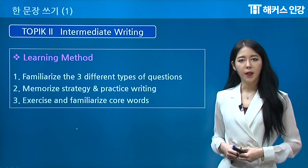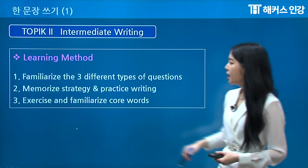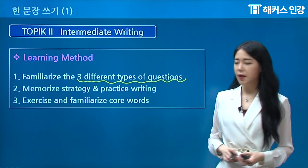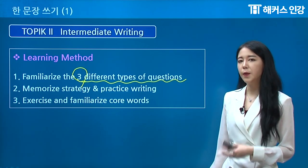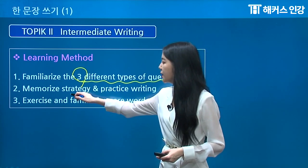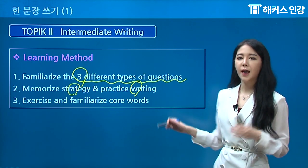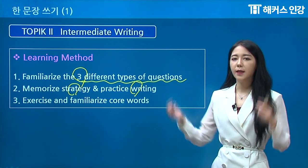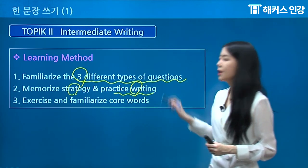What about the learning method? What do you guys have to do? Number one, familiarize the three different types of questions. There are going to be three different types of questions in this writing course. The questions are four questions, but they're going to be three different types, so I want you guys to familiarize that. Next, memorize the strategy and practice writing. When you memorize the strategy — I mean really memorize it — when you see the problem, I want you guys to think about the strategy and then put that in mind and practice writing.